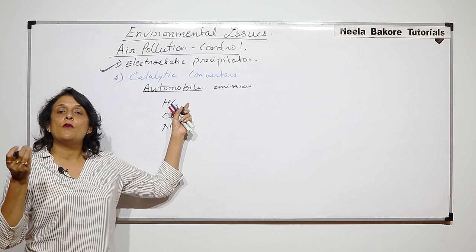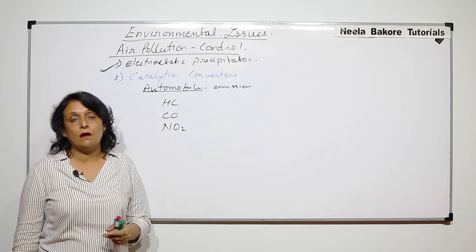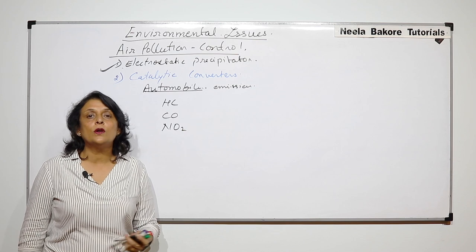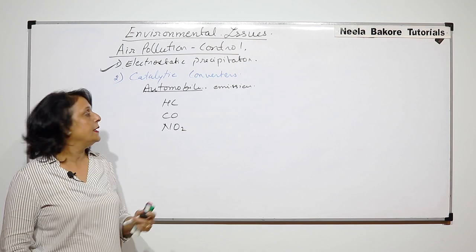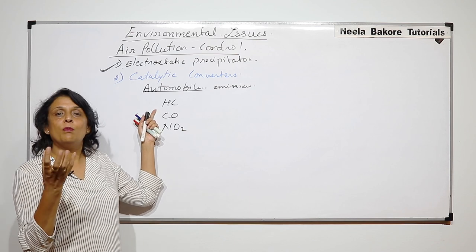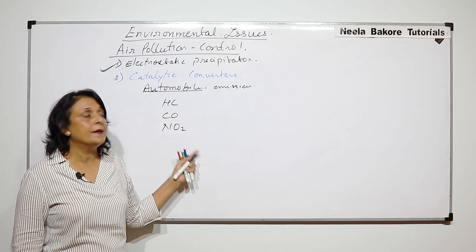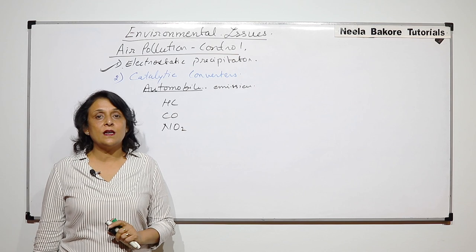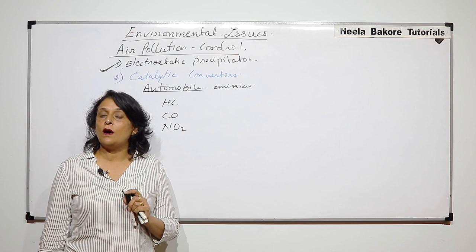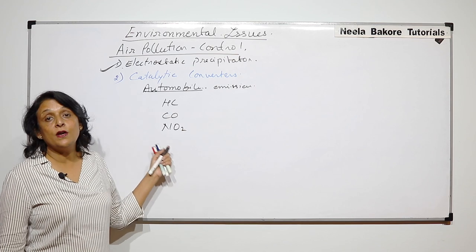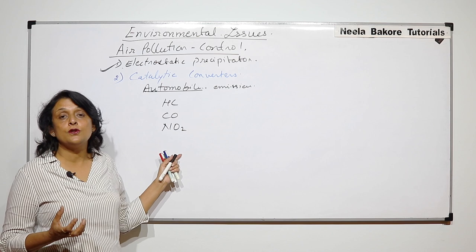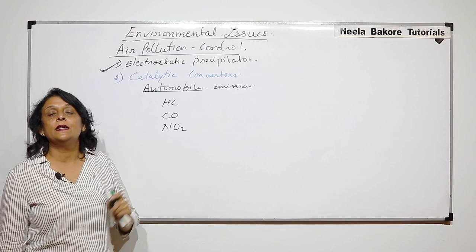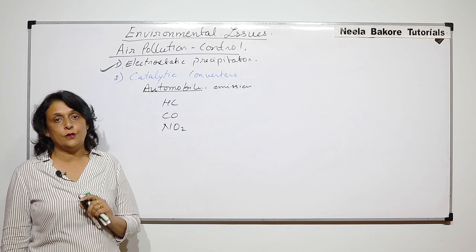Hydrocarbons are seen in the form of that black smoke which is emitted when automobiles are old or the filters are not working properly. Carbon monoxide is produced whenever there is incomplete combustion of fuel. Because fossil fuel contains nitrogen, that nitrogen is emitted in the form of oxides of nitrogen.